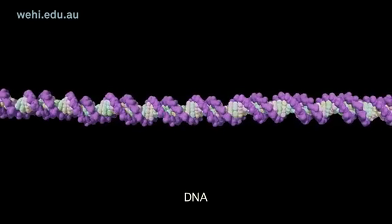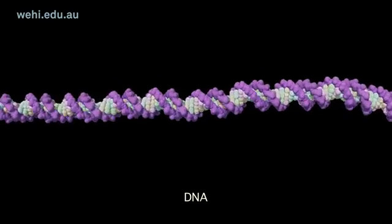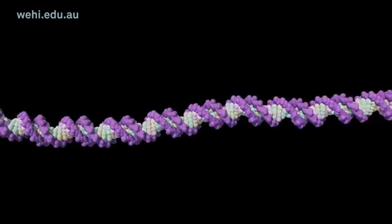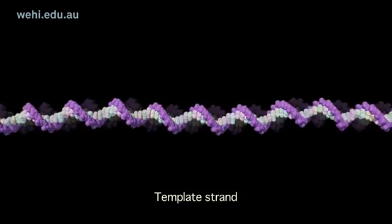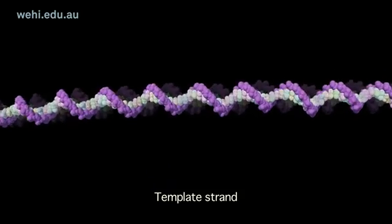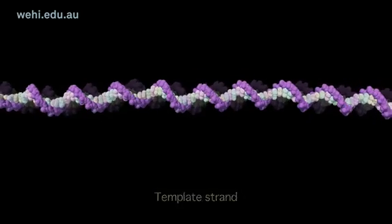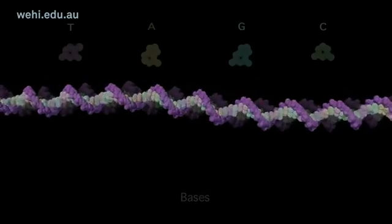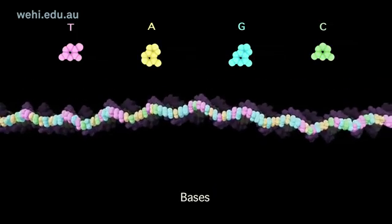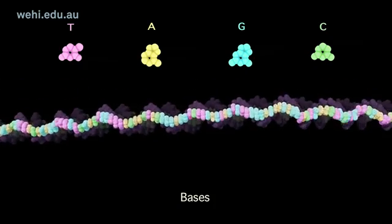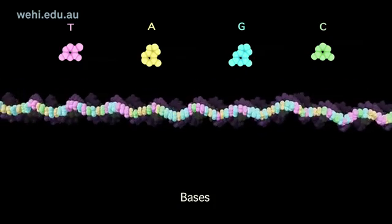DNA Review. Our genetic information is encoded by the DNA double helix. When DNA is read or transcribed, one strand of the double helix serves as a template strand. The specific order of the four bases encodes genetic information and serves as the blueprint for our genetic makeup.